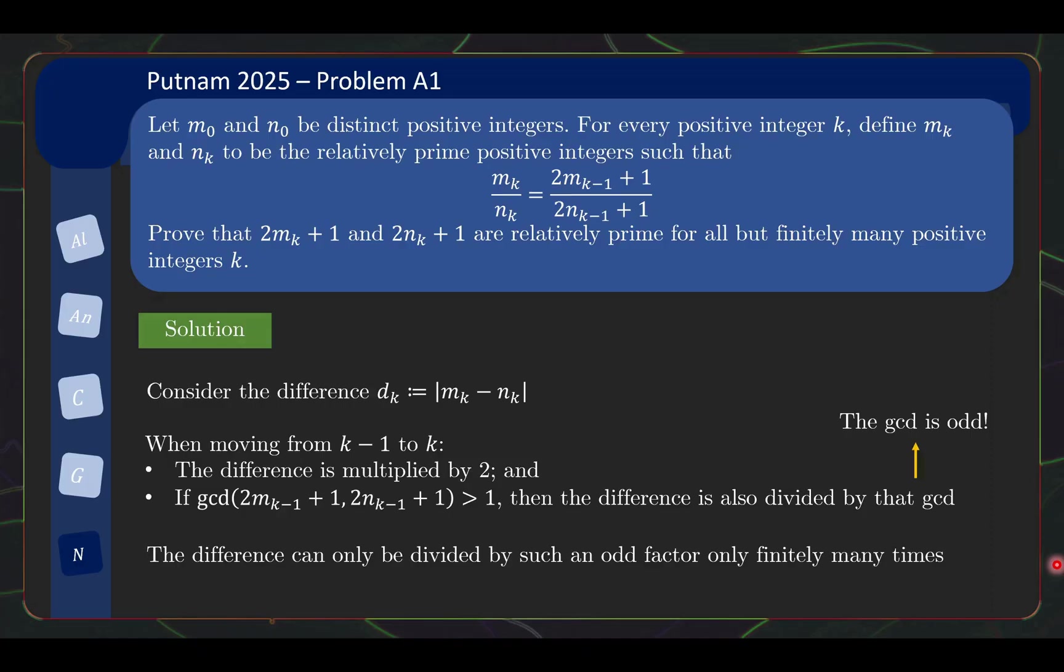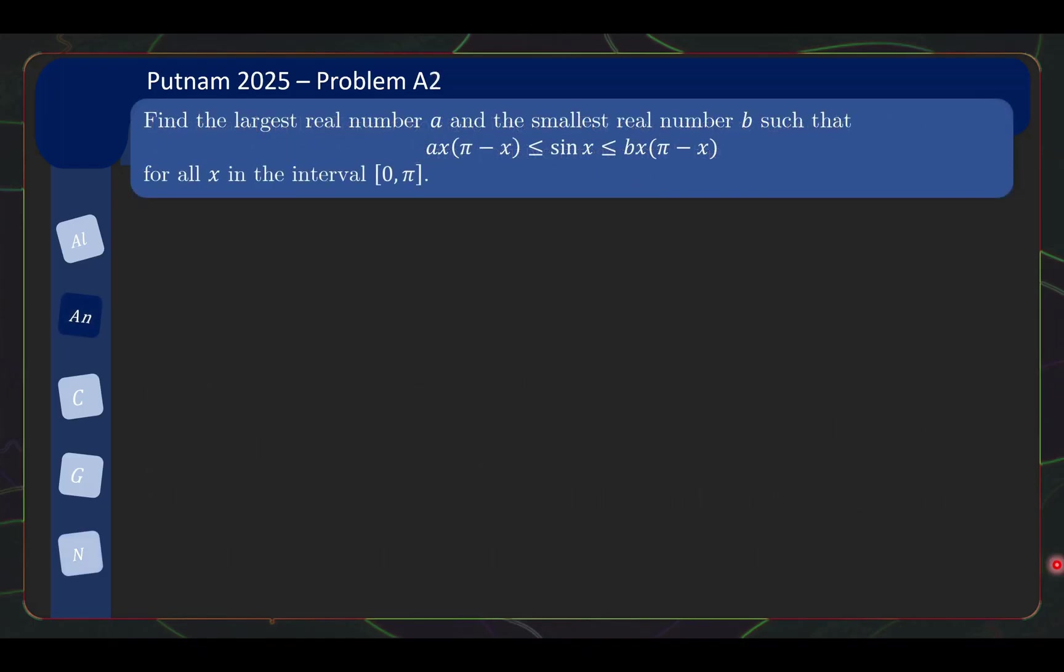Now, let's take a look at the next problem, problem A2 which is another delightful little present. For A2 we have an analysis problem but basically it's just the study of functions and you don't need to be too worried about the term analysis. So let's take a look at the problem statement. Find the largest real number A and smallest real number B such that Ax(π - x) ≤ sin x ≤ Bx(π - x) for all x in the interval [0,π].